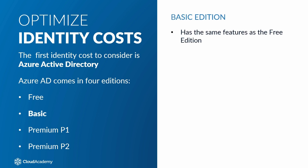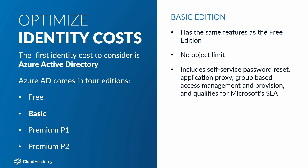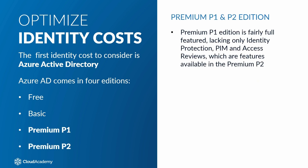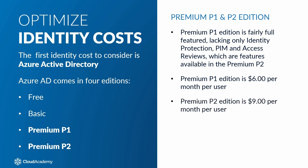The basic edition is similar to the free edition, having the same features, but there is no object limit and it includes self-service password reset, application proxy, group-based access management and provisioning, and does qualify for Microsoft's SLA. The cost for the basic edition is $1 per month per user. The premium P1 edition is fairly full-featured, lacking only identity protection, privileged identity management, and access reviews, which are features available in the premium P2 edition. The premium P1 edition is $6 per month per user and the premium P2 edition is $9 per month per user. By determining which Azure AD features your organization is currently using or planning to use, you can make a cost-effective choice when choosing an Azure AD edition.